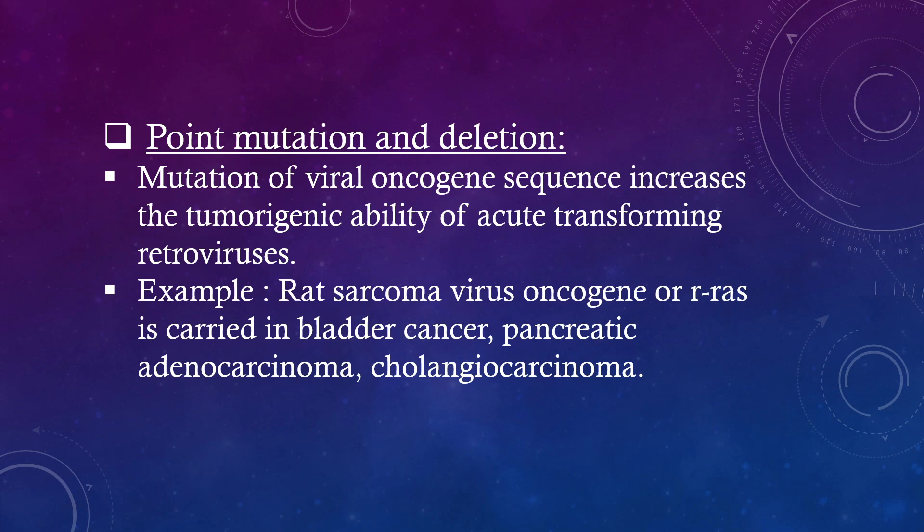First, point mutation and deletion: mutation of viral oncogene sequence increases the tumorigenic ability of acute transforming retroviruses. Example: Rous sarcoma virus oncogene or RAS is carried in bladder cancer, pancreatic adenocarcinoma, and cholangiocarcinoma.